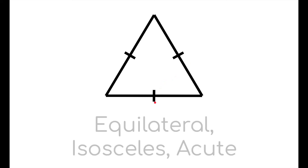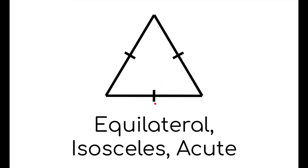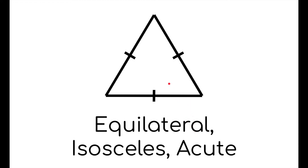What about this one? Because all three sides are the same, it is an equilateral triangle. Remember, an equilateral triangle is also an isosceles triangle. And because an equilateral triangle has all its angles as 60 degrees, which is less than 90 degrees, it is also an acute triangle.